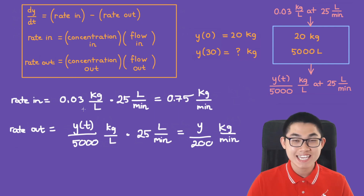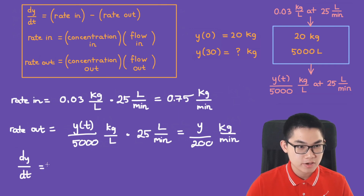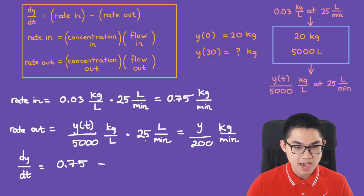Step 2 is to find dy/dt. That is very simple: dy/dt equals rate in, which is 0.75, minus rate out, which is y over 200.